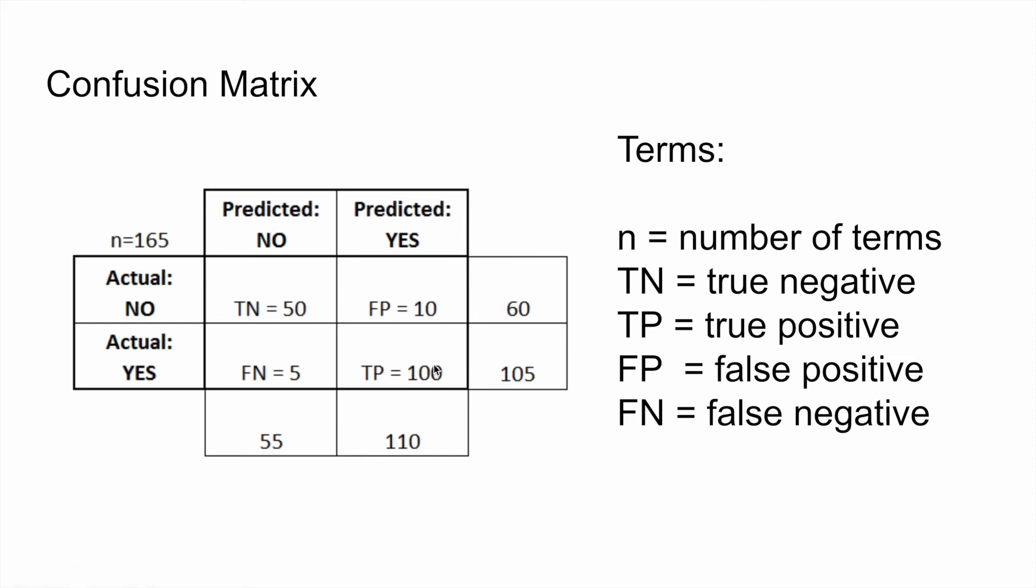So, branching off of this, a true positive indicates that the model was able to correctly identify 100 cases as diseased. Now, false positives, on the other hand, means that the model has identified 10 cases as diseased when the patient was actually healthy, which is not good for anyone.